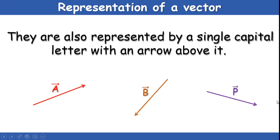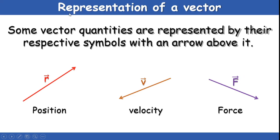For example, A bar is a vector that has both magnitude and direction; similarly B bar and P bar. In physics, the position vector is defined as R bar, the velocity vector as V bar, and the force vector as F bar — capital F bar.